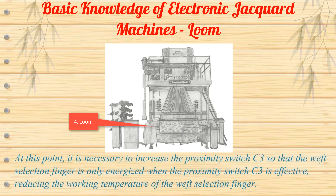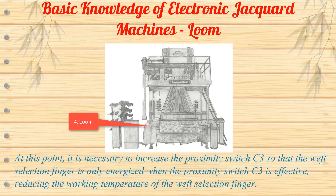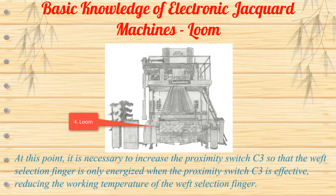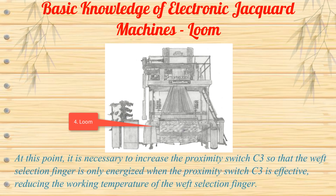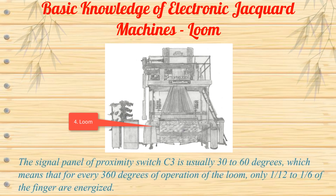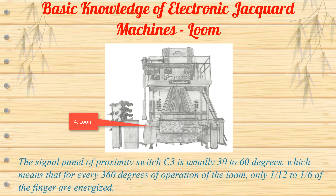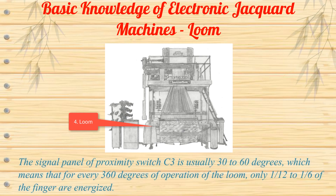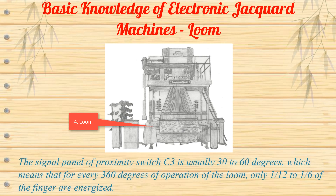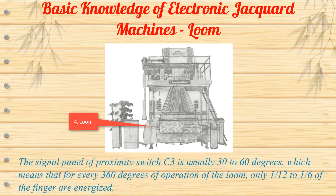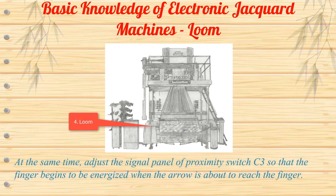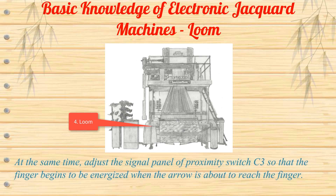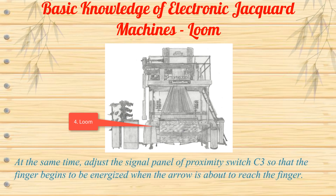At this point, it is necessary to add proximity switch C3 so that the weft selection finger is only energized when proximity switch C3 is active, reducing the working temperature of the weft selection finger. The signal panel of proximity switch C3 is usually 30 to 60 degrees, meaning that for every 360 degrees of loom operation, only 1/12th to 1/6th of the finger is energized. At the same time, adjust the signal panel of C3 so that the finger begins to be energized when the arrow is about to reach the finger.